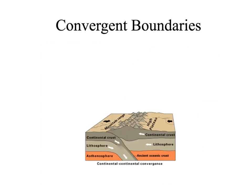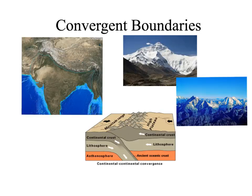The third convergent boundary type is continental-continental. When two continental crust plates move toward each other, one goes underneath, but you end up with a lot of folding and really big mountain ranges. Where the Indian plate and the Eurasian plate — both continental crust — are colliding, you get the giant mountains we know as the Himalayas. You can see those tall, jagged, rocky mountains, including Mount Everest, the tallest mountain on Earth.